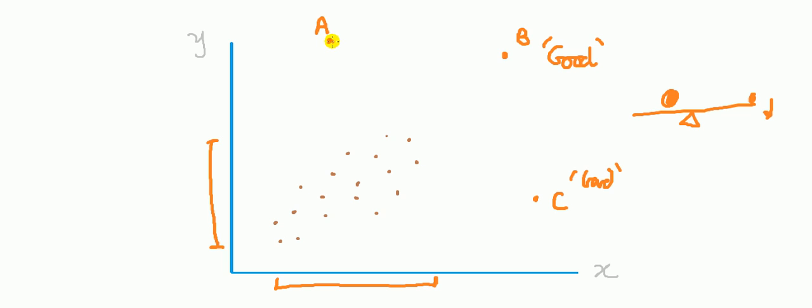So to recap, an outlier is one which has a large residual, positive or negative. And all that means is that the dot is far from the line compared to all the other dots. Points of leverage, they are like outliers in the X direction, so they're outside the range of X.